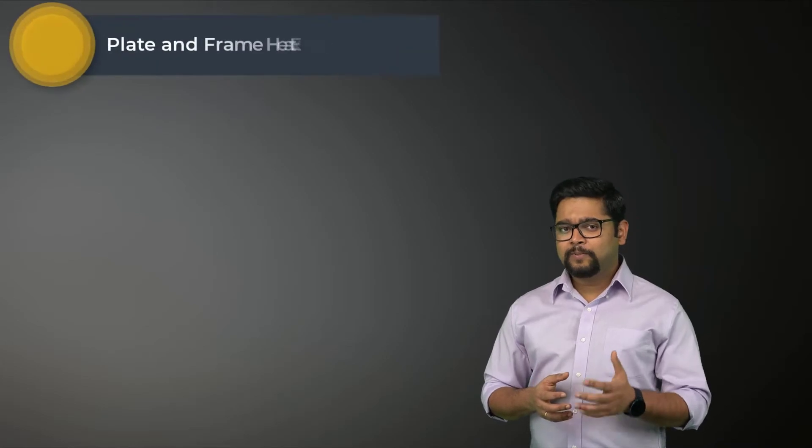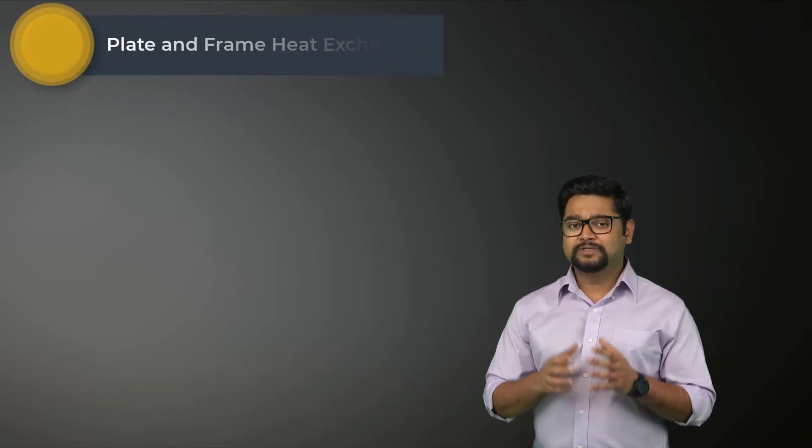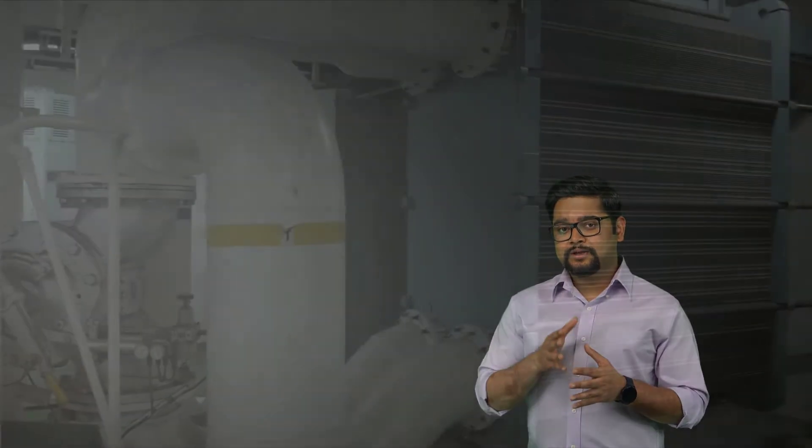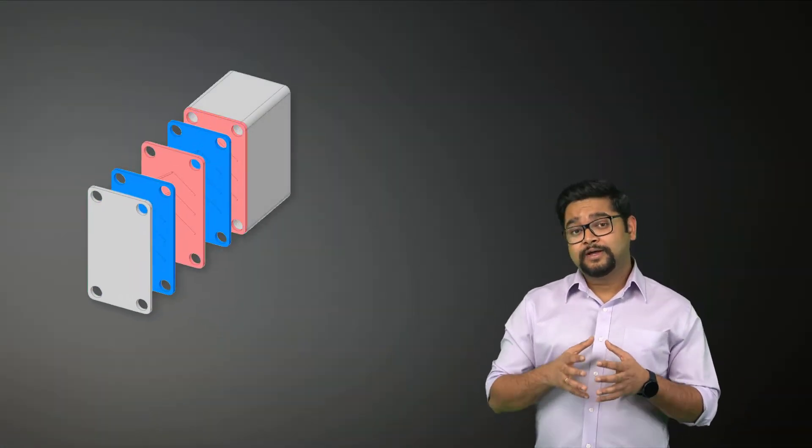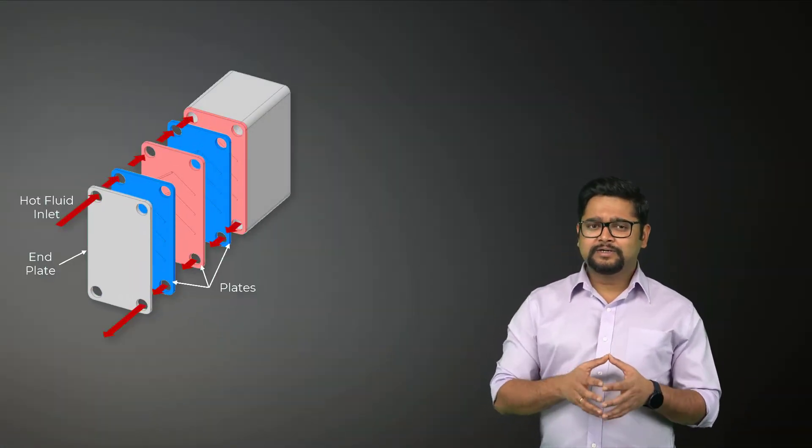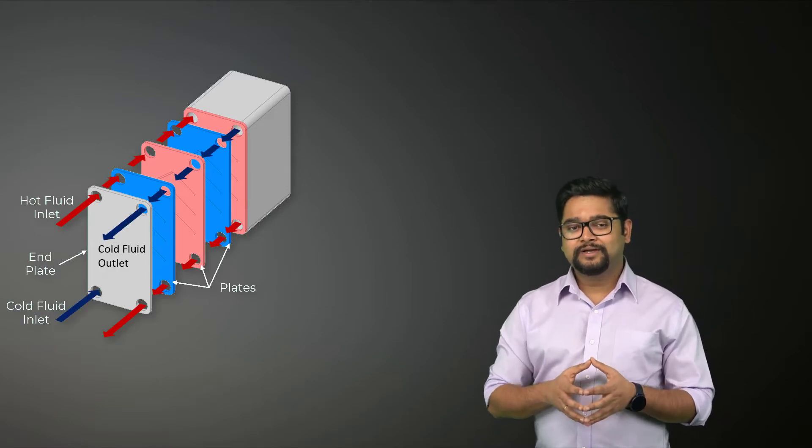Plate and frame heat exchangers or simply plate heat exchangers consist of a series of plates with corrugated flat flow passages mounted in a frame using a screw press. Hot and cold fluids flow in alternate passages and thus each cold fluid is surrounded by two hot fluid streams resulting in a very effective heat transfer.